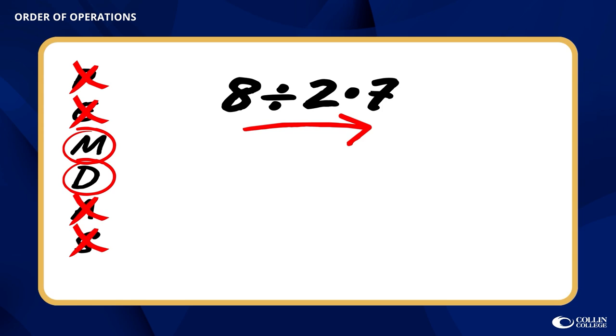We will do the division first in this problem because it comes before multiplication in the expression itself. So moving left to right, 8 divided by 2 would be 4. And the product of 4 and 7 gives you a value of 28.